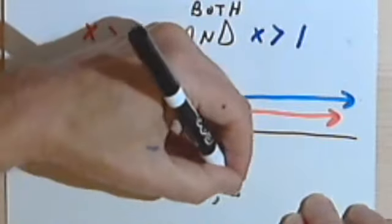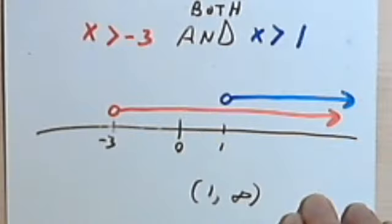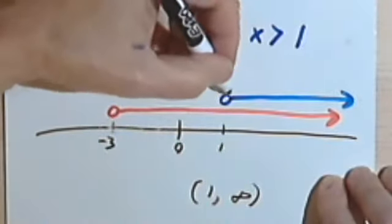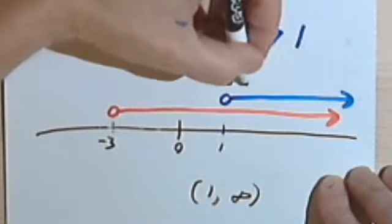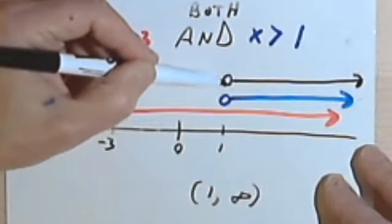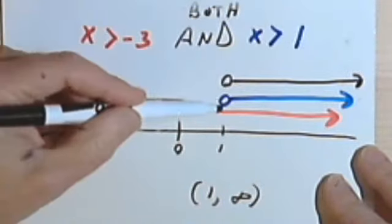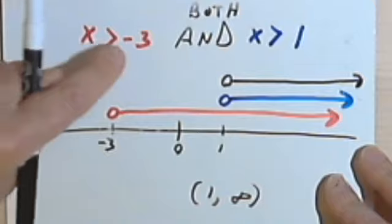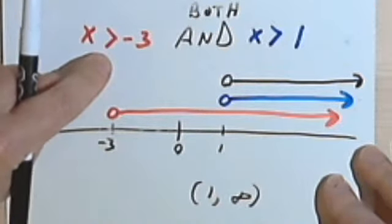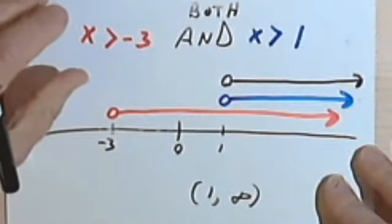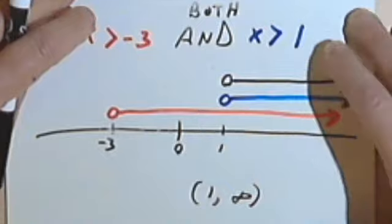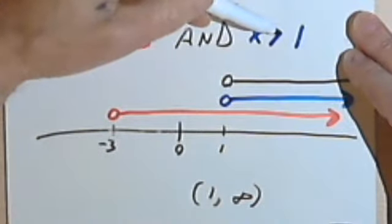So my interval notation is going to give me 1 up to infinity. And writing this as the graphing solution to it, I'm just going to have this black line, the same as the blue line. So this part, the x greater than negative 3, doesn't really, it's not necessary. I can think of this whole thing as basically equaling x is greater than 1.